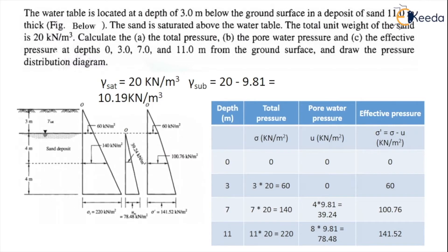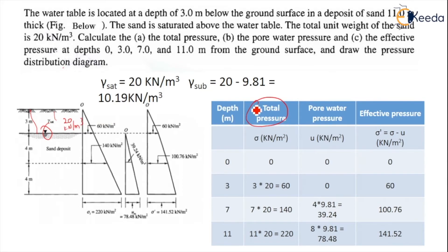Coming to the next diagram: the water table is located at a depth of 3 meters below the ground level. In a sand deposit, total depth is 4 + 4 + 3 = 11 meters. The sand is saturated above the water table with gamma sat. We have to calculate total pressure, pore water pressure, and effective pressure at depths 0, 3, 7, and 11 meters from ground level, and draw the pressure distribution diagram.